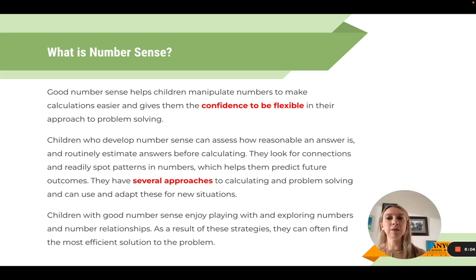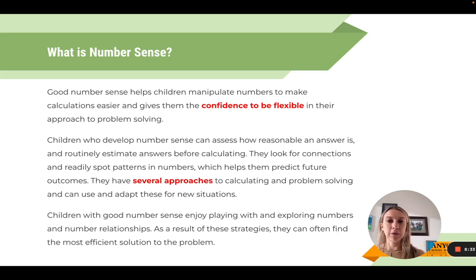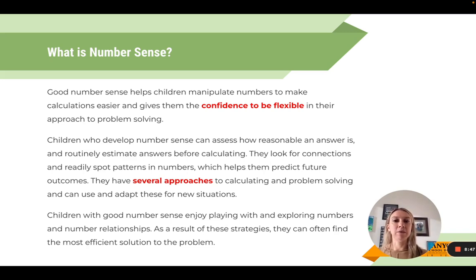Oftentimes when I go into classrooms, students come up with seemingly unreasonable answers to math equations, and it's difficult to identify where they went wrong because they don't have the ability to check if their answer is reasonable. Students with good number sense look for connections, readily spot patterns in numbers to predict future outcomes, and have several approaches to calculating and problem solving, adapting them for new situations.